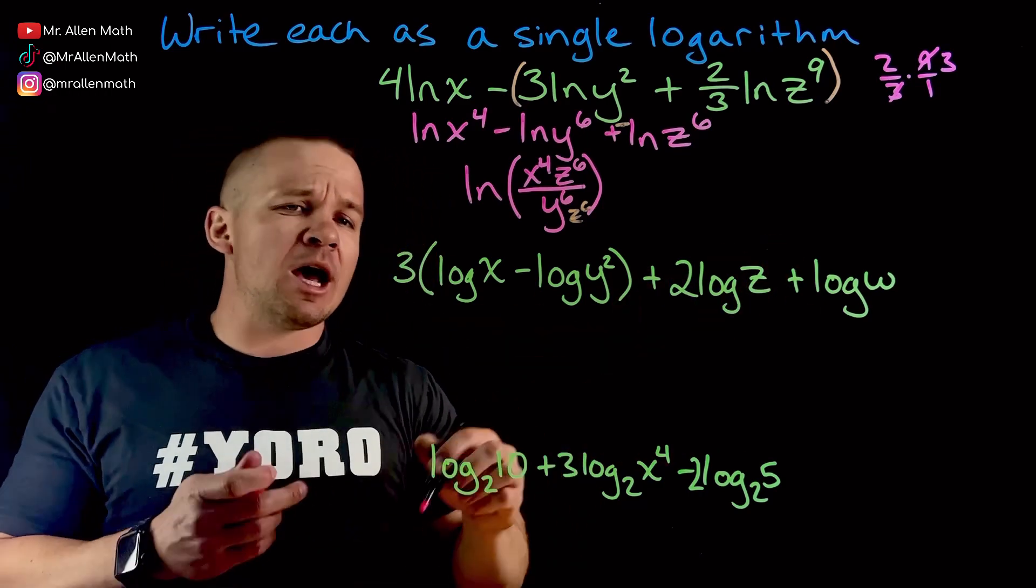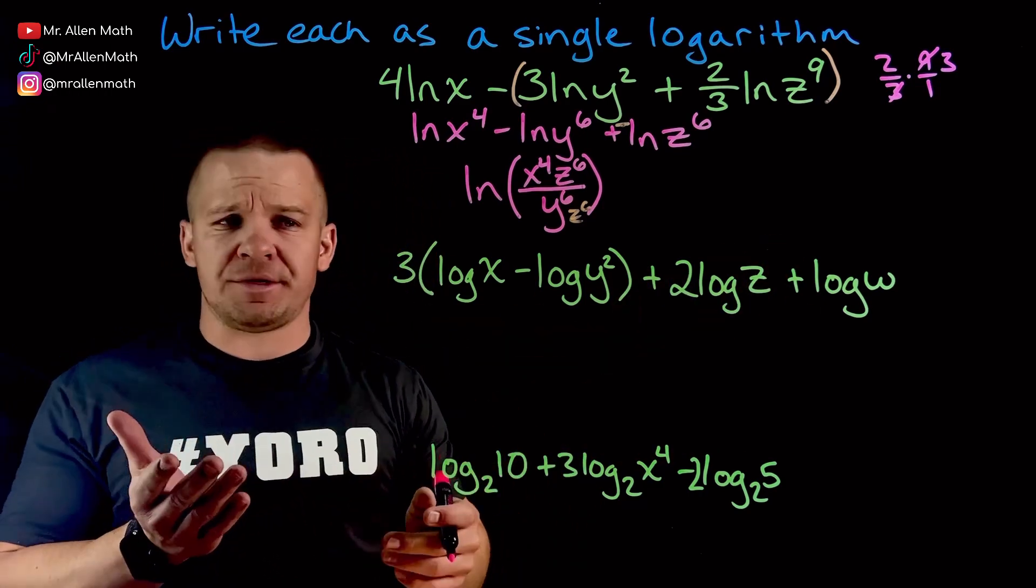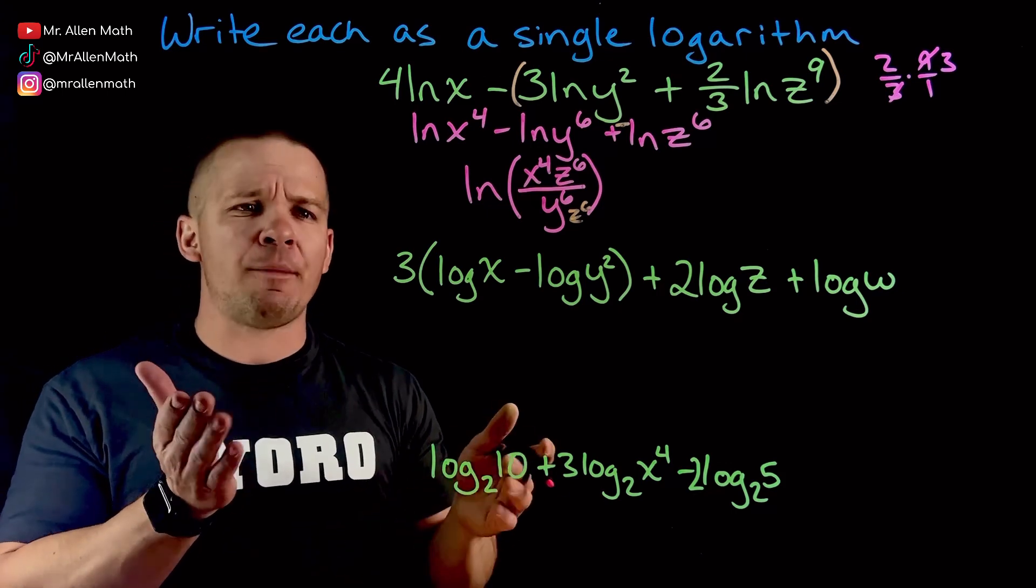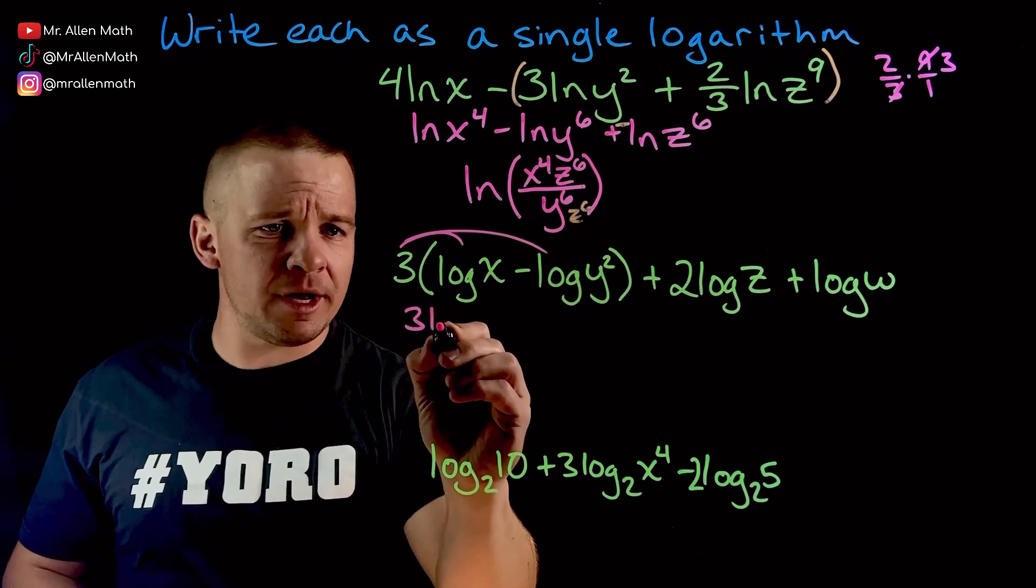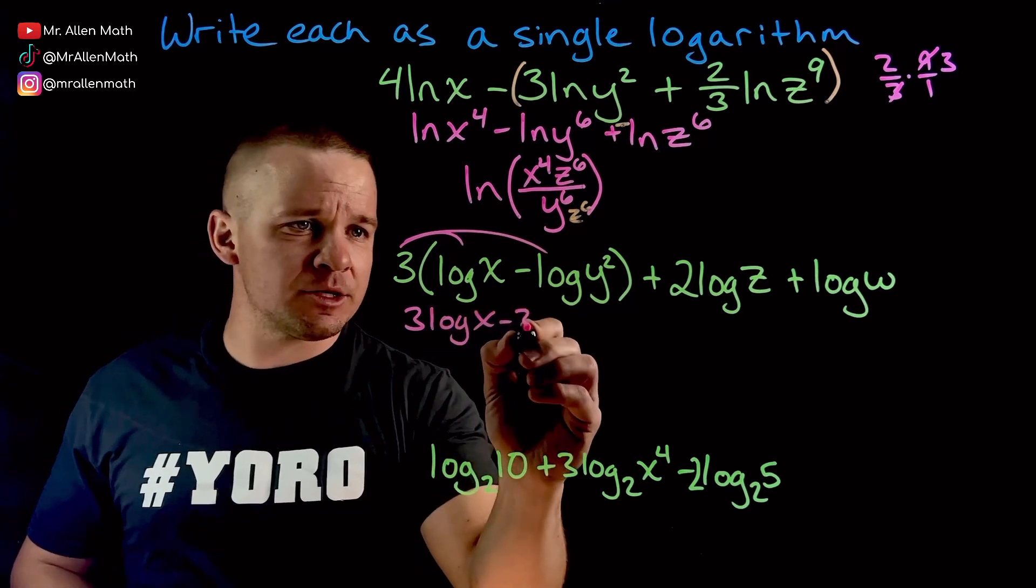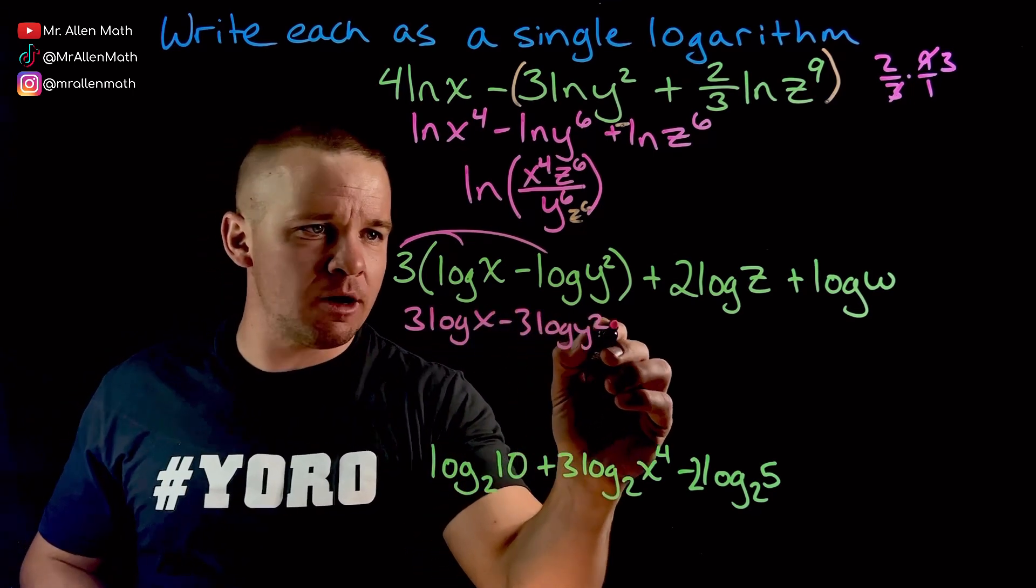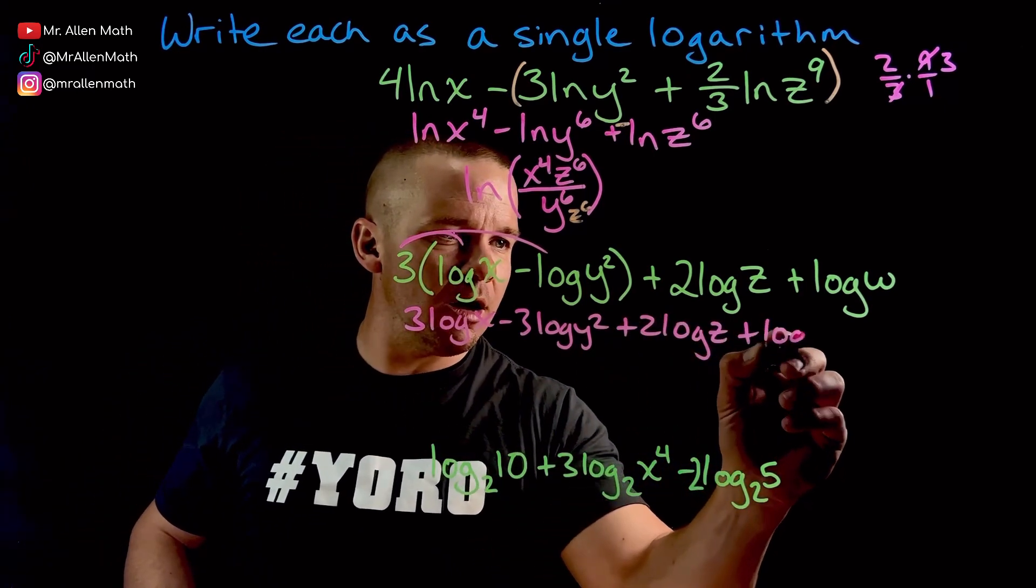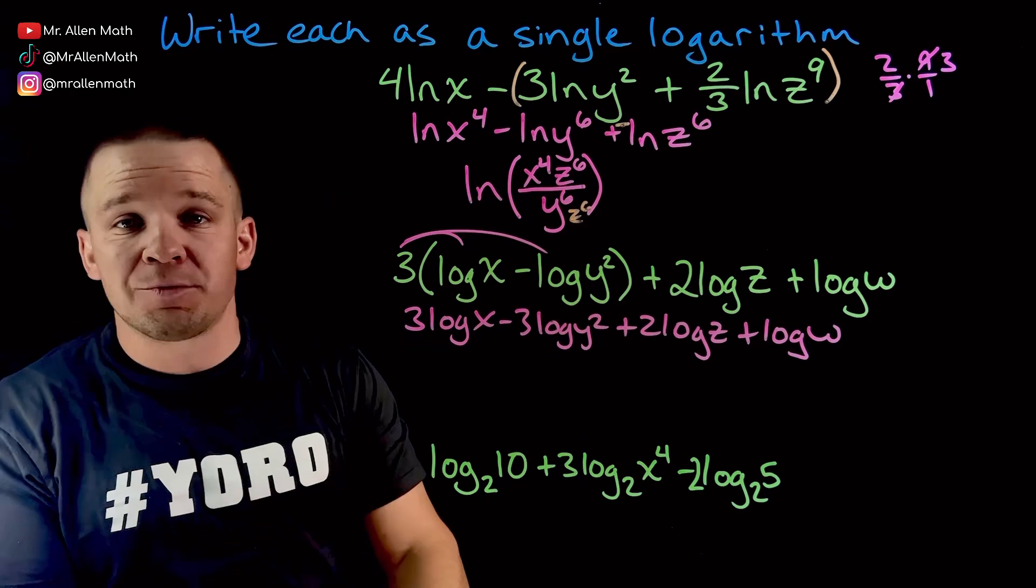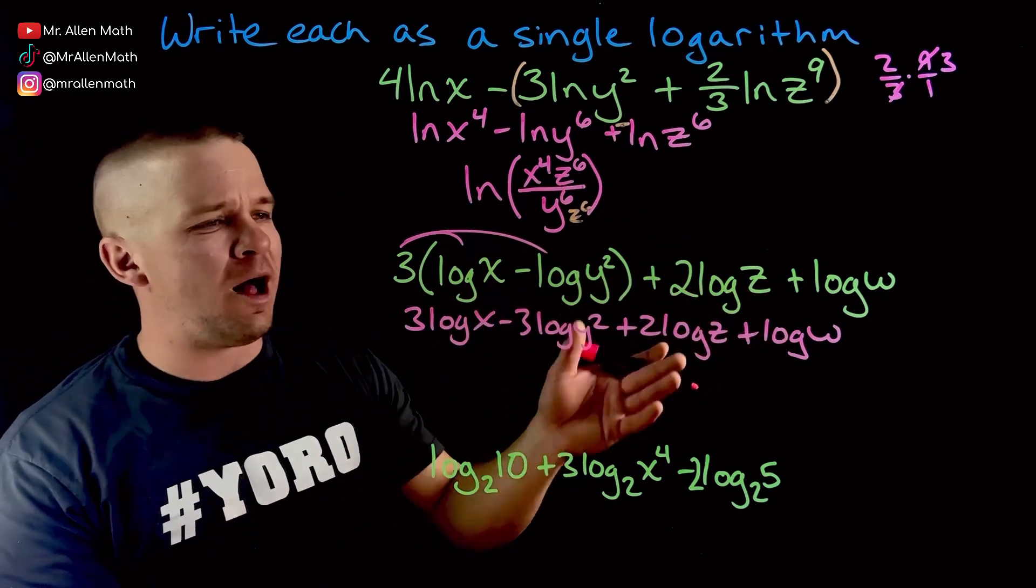Beautiful. Next one, we have ourselves three in parentheses. What can I do with that? That looks a little weird. How about I distribute this to each. So now I got three log of x minus three log of y squared plus two log of z plus log of w. Apparently, I ran out of letters when I was doing this one. I should have done w, x, y, z. Oh, well.